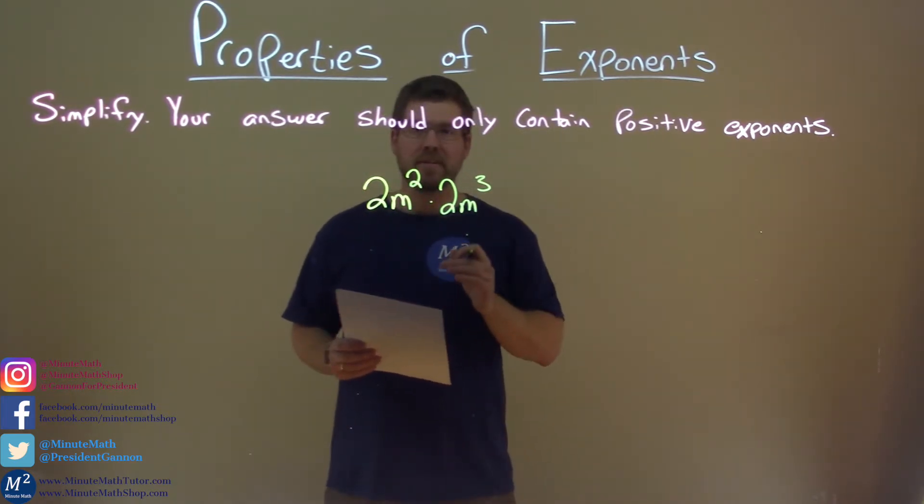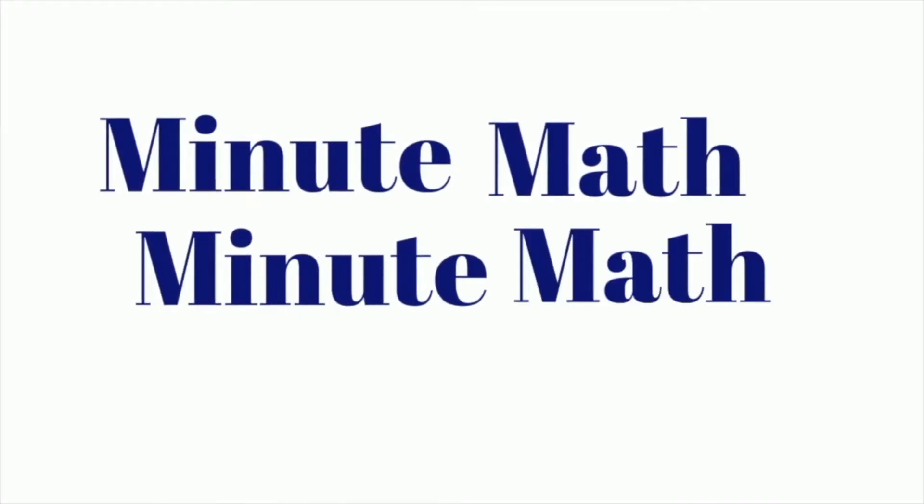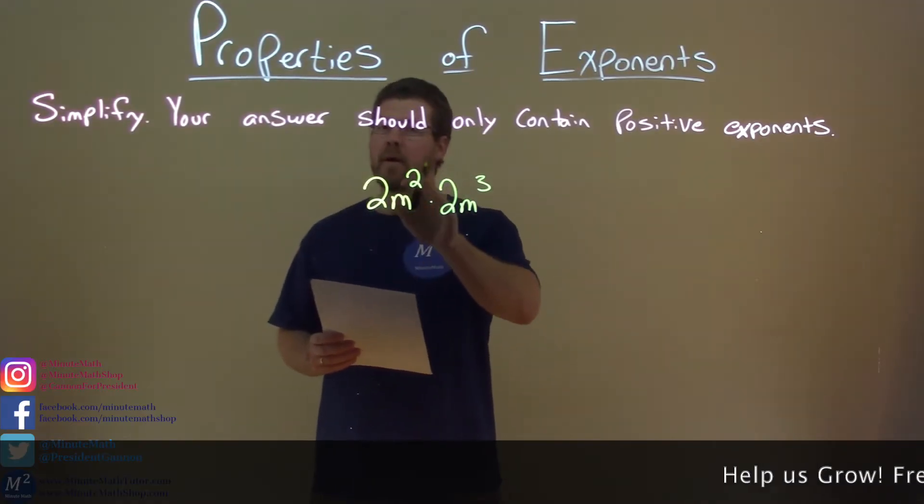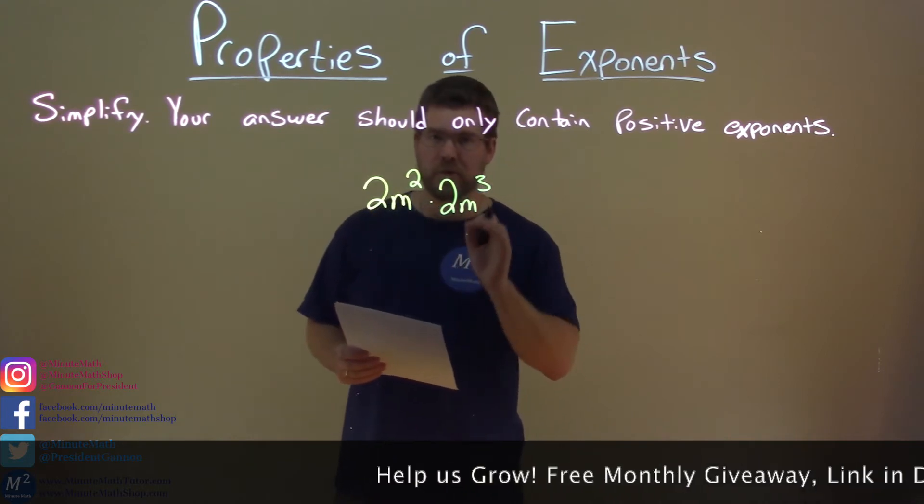So, if I was given this problem, we need to simplify 2m squared times 2m to the third power.